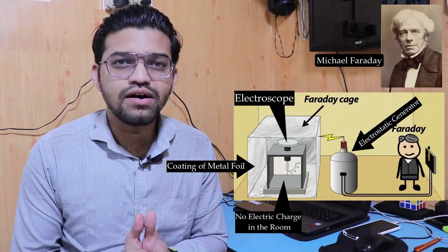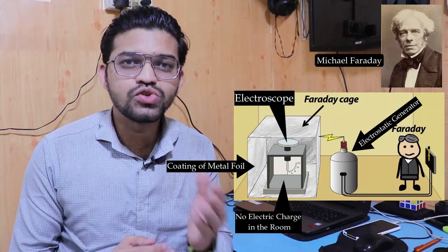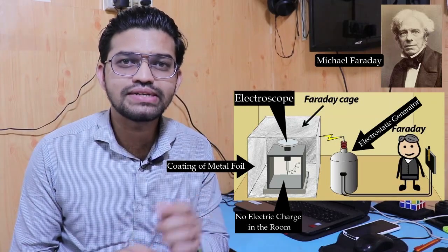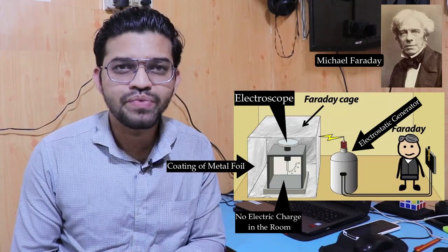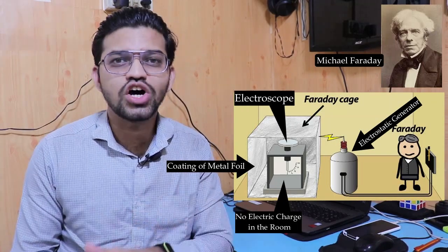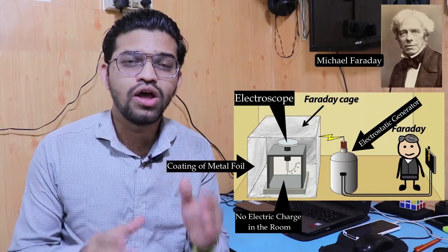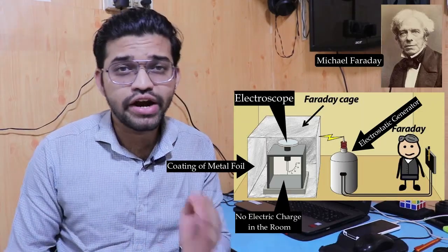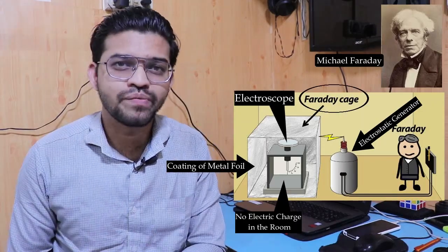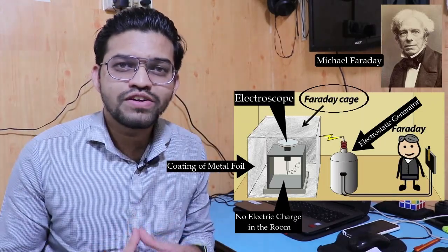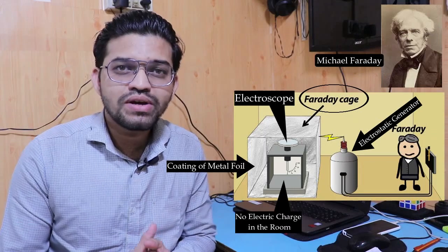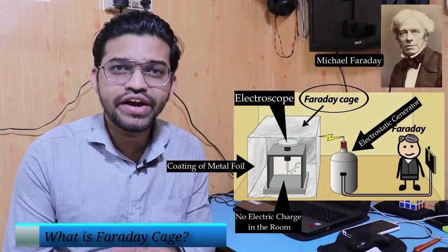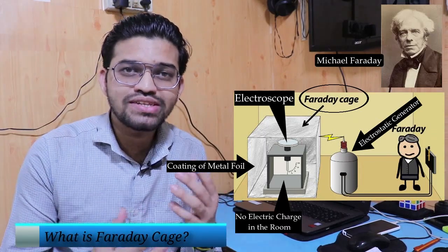The electroscope is the instrument used to measure the electrical charge present inside the body, and it confirmed there was no electrical charge present at all. This is where the idea of the Faraday cage was born. Our today's video topic is the Faraday cage and how does it work.